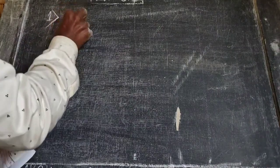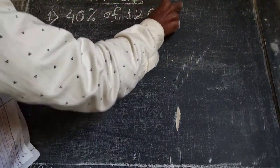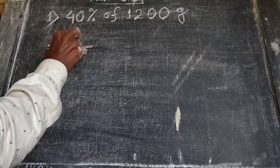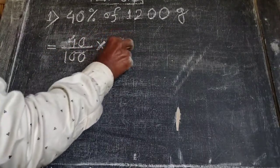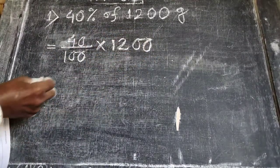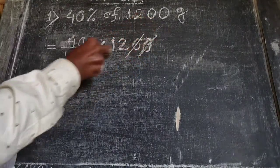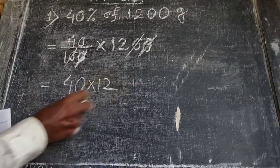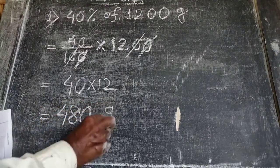Now finding percentages of quantities. (1) 40 percent of 1200 grams: we write 40 by 100 into 1200. After cancelling, we get 40 into 12 equals 480 grams.